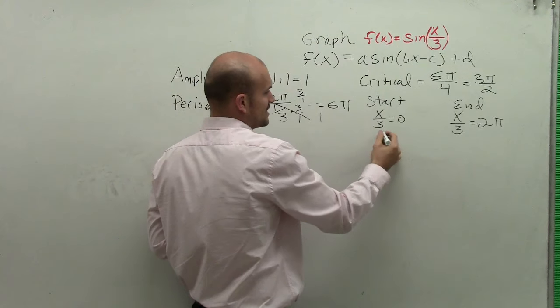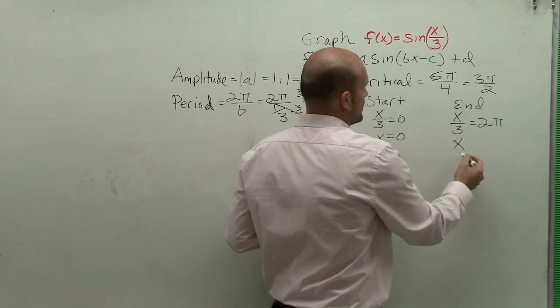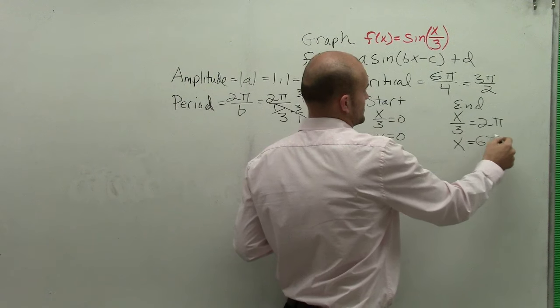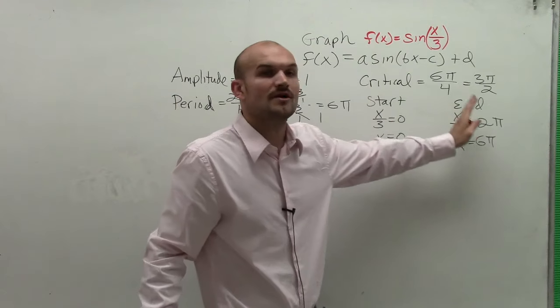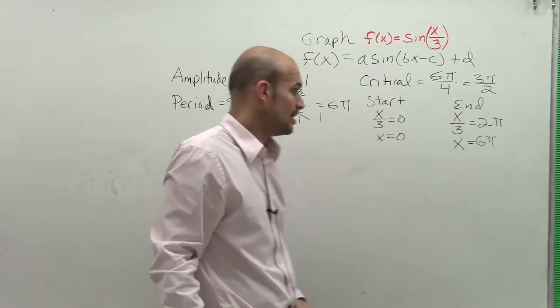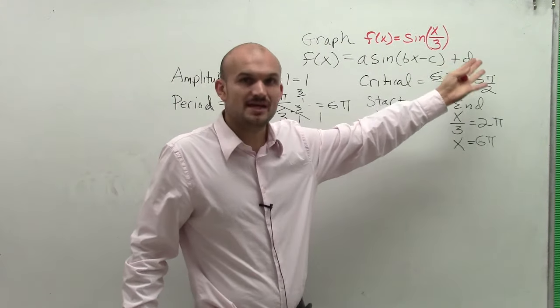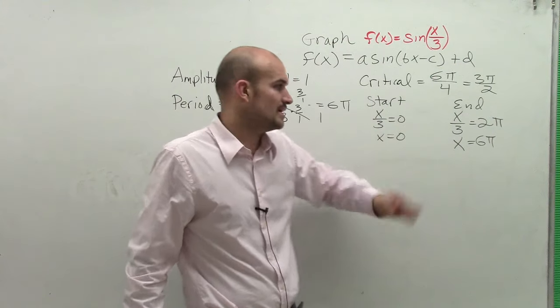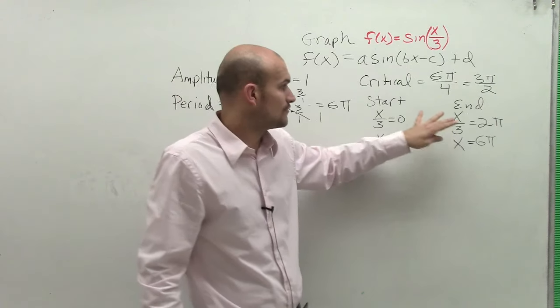So by solving for x, I get x equals 0. And then solving at the end, we're going to have x equals 6 pi. And this makes sense because if we're going to go from start from the end, it's going to take us 6 pi to complete one cycle, as we already know. But the important reason why doing this is because whenever we have a phase shift, that means it's going to be shifting left or right, this is becoming a very important part of graphing.